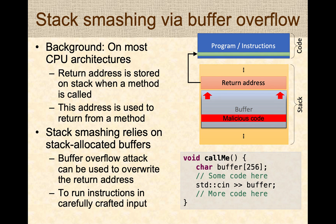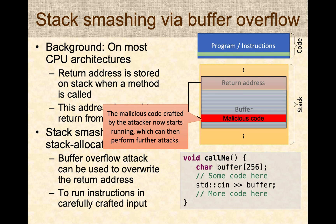Specifically, when they overwrite the buffer with malicious code, they can place malicious code in the program and modify the return address to point to that malicious code. When the method ends, rather than returning to the method that called it, the malicious code starts executing. This code can perform further attacks — like running other programs or starting up a shell. If the program was running as a super user, the attacker gets a super user shell, allowing them to modify administrative settings, delete files, and so on.